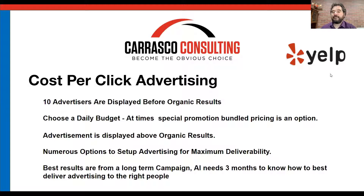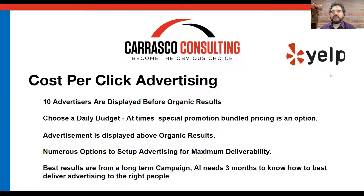Best results come from a long-term campaign, as the AI needs three months to learn how to best deliver advertising to the right people. That bottom point is huge — because the AI, which is one of the most advanced out there, knows where to place your ad and when to place it so it can possibly get clicked. This video series is just an overview of cost per click advertising.